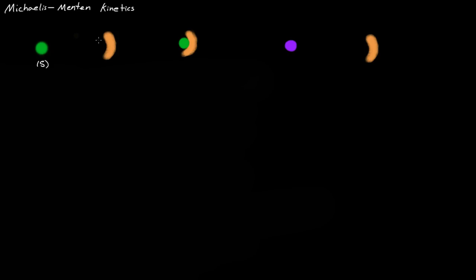We're going to start by having a little green figure represent a substrate. When you have a substrate and an enzyme, they will go to a substrate-enzyme complex, which we'll call SE. The rate at which this occurs depends on the concentration of the substrate, the concentration of the enzyme, and a kinetic constant we call K1.